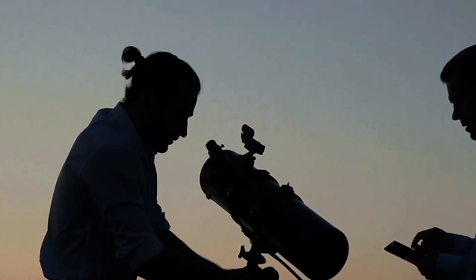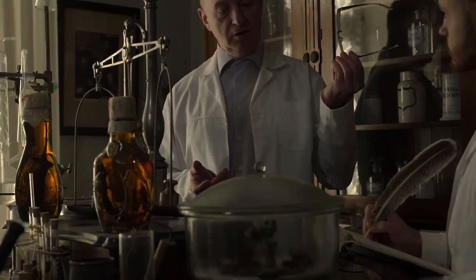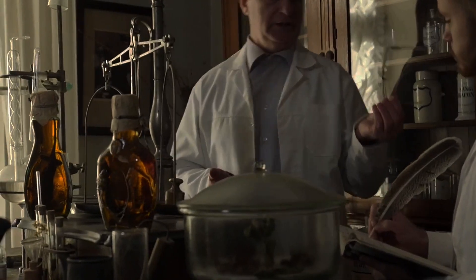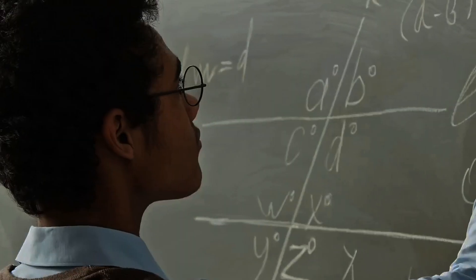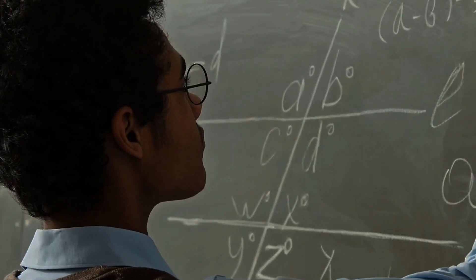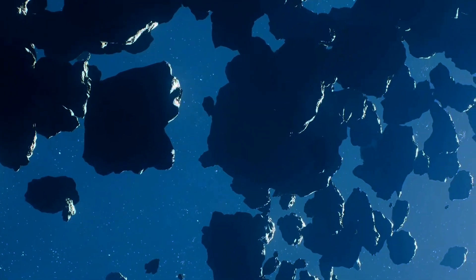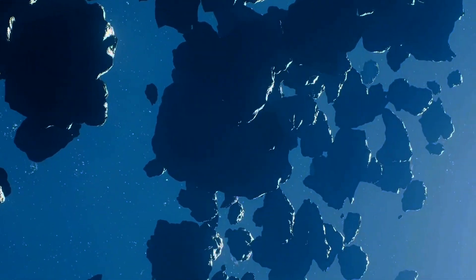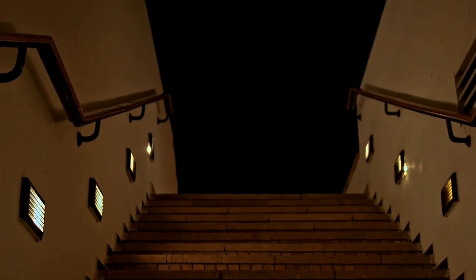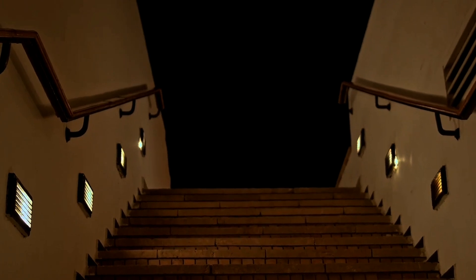What is quantization and why is it necessary for general relativity? To understand quantization, we need to go back to the basics of quantum mechanics. In classical physics, quantities like energy and momentum are continuous. However, quantum mechanics tells us that these quantities are actually discrete, existing in quantized packets. This means that energy, for example, can only take on specific discrete values, much like steps on a staircase rather than a ramp.